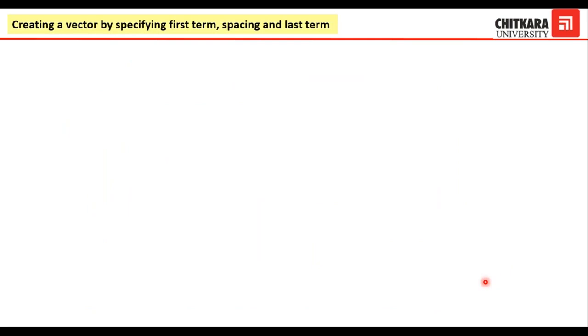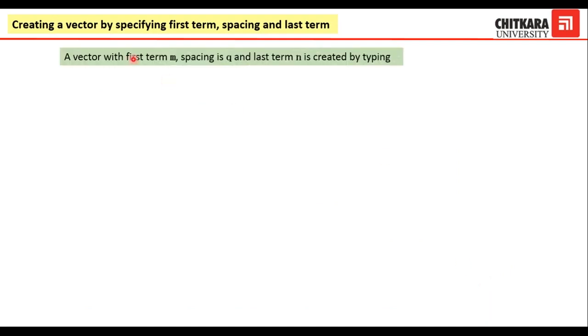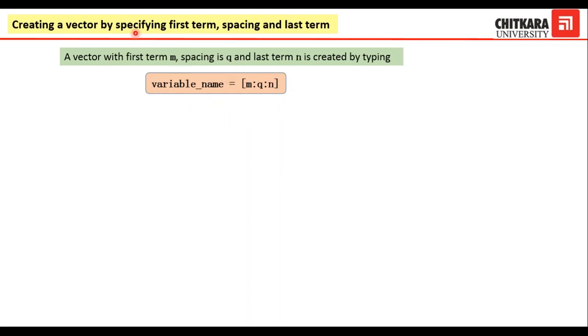Next, we move on to creating a vector by specifying the first term, spacing, and the last term. If the first term is m, the spacing between numbers is q, and the last term is n, it can be created by typing: variable name equals square bracket, then first term, colon, spacing, colon, last term. This is the format for writing a vector by specifying the first term, spacing, and last term.